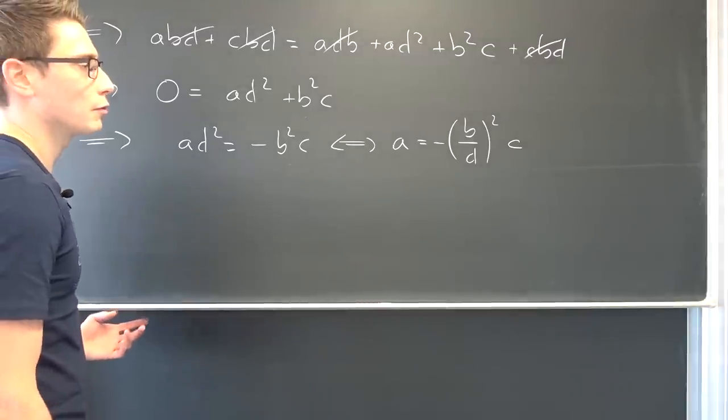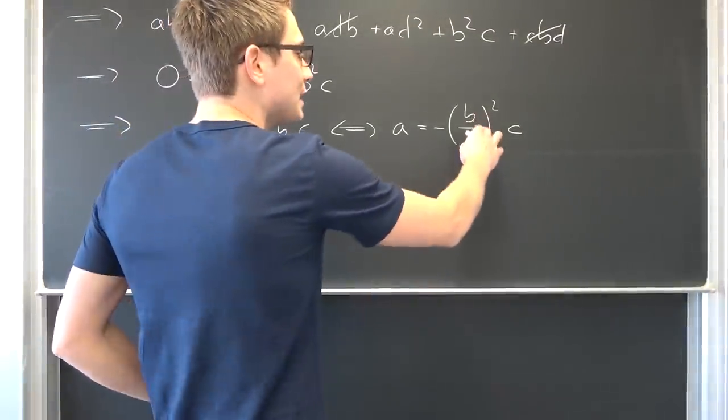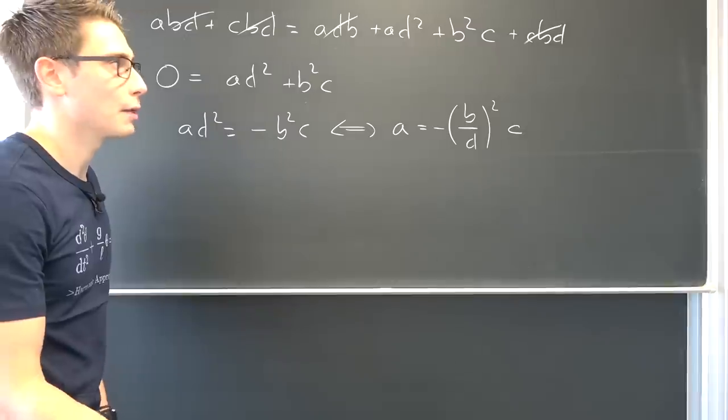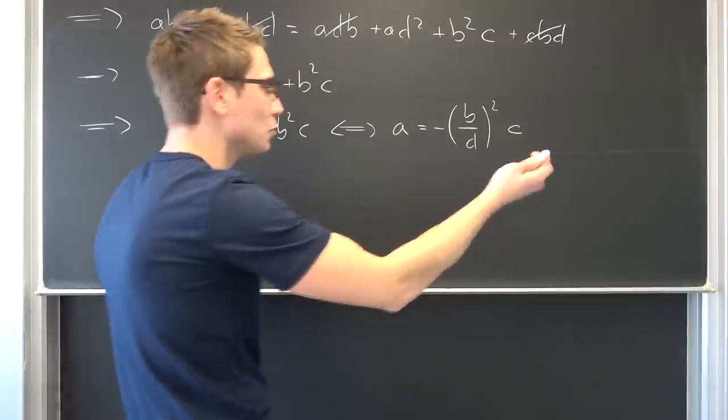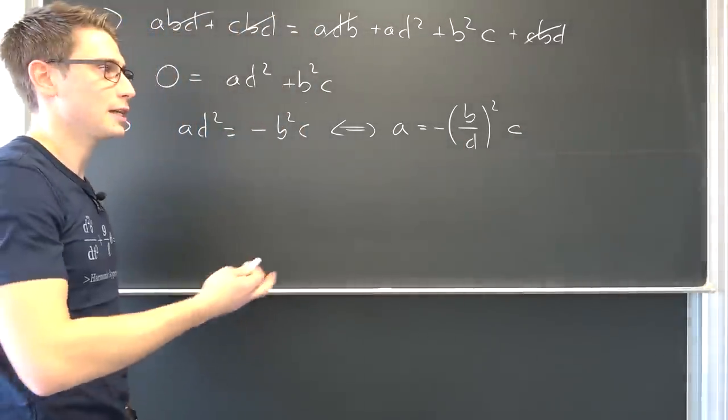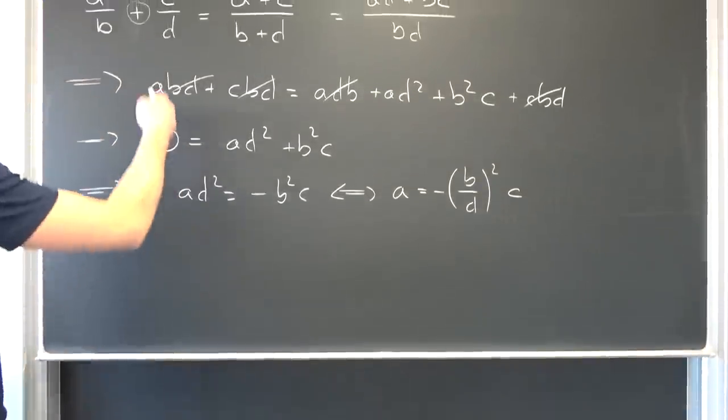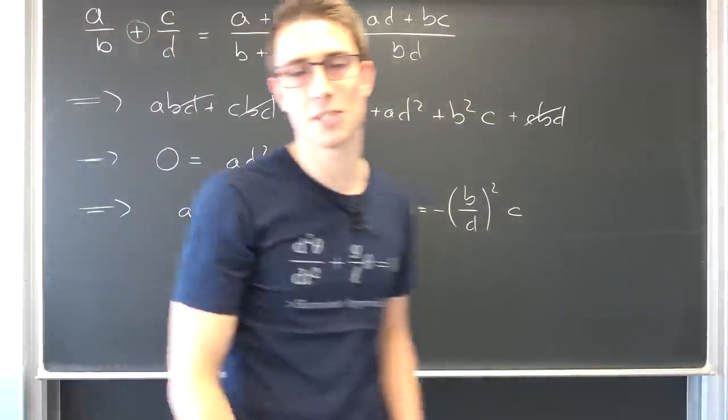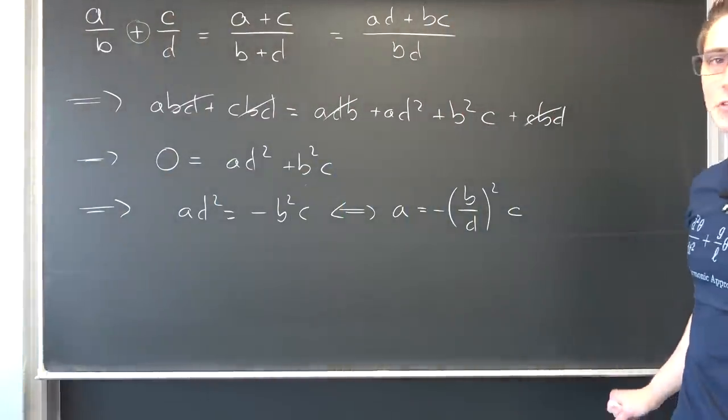But if we were, for example, to say b and d would both be 1 and then we would have c being equal to 2, we would end up with a being equal to negative 2. And then we would have valid solutions that we could plug in and we are good to go. Does work out in the positive and negative integers.